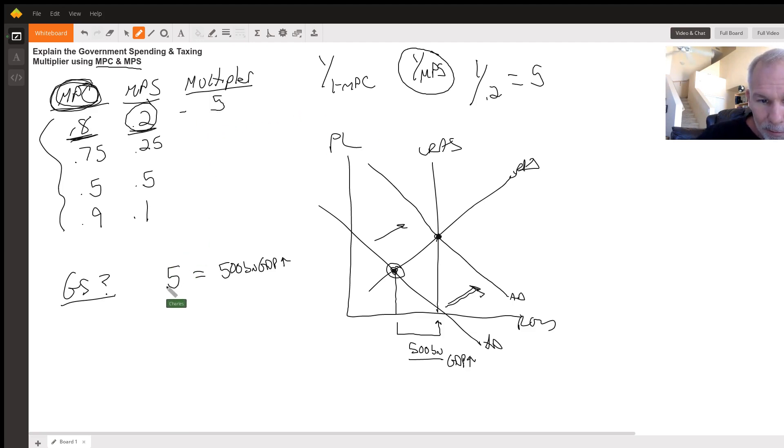If my multiplier is five, what must the government spend times my multiplier to give me the 500 billion of increase in GDP to push aggregate demand back to full employment? That's easy. The government spends 100 billion times the five multiplier gives me 500 billion GDP increase to push aggregate demand. So that's the whole point is that the government doesn't need to spend 500 billion because it has an idea what the multiplier is. Therefore, the government will spend 100 billion times the multiplier, which will give us the 500 billion GDP.